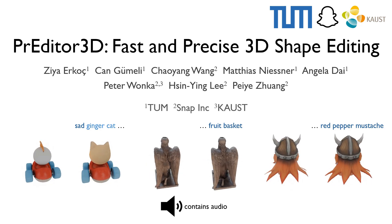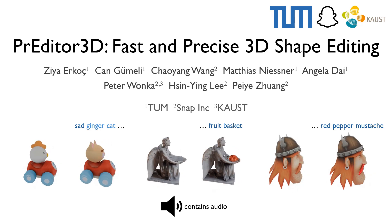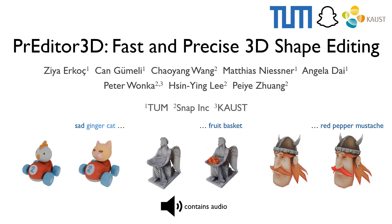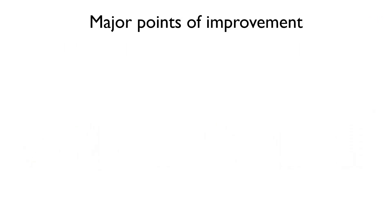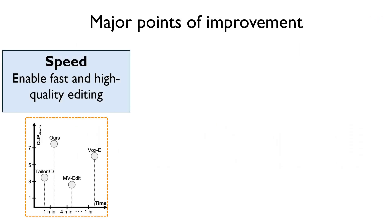We present Predator 3D, a 3D editing method that enables fast and precise modification of 3D shapes. We can achieve high-quality editing in around a minute, since we avoid using lengthy dataset updates or SDS optimization and rely only on feedforward models.